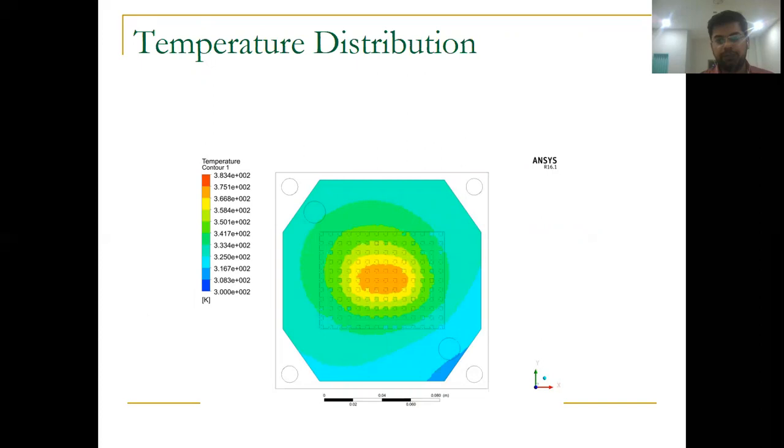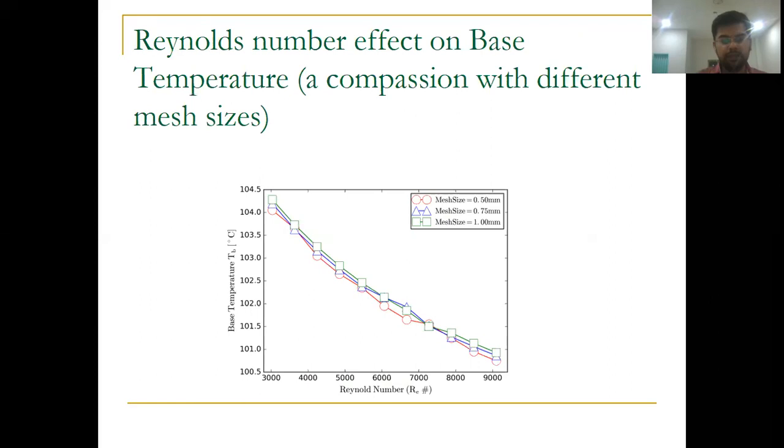There are some graphs which I have made. The effect of the flow rate on the base temperature - as I told you earlier, increasing the flow rate decreases the base temperature. This is the inverse relation between the flow rate and the base temperature. I have studied a mesh comparison, and when we increase the mesh size, the temperature drops.